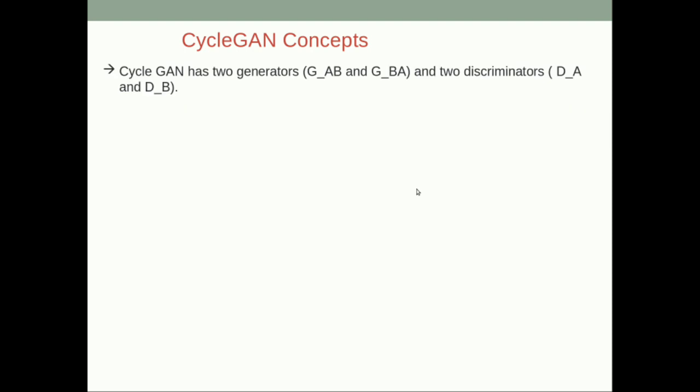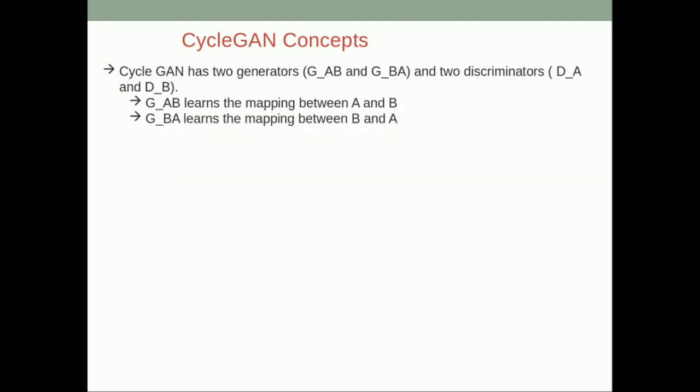In CycleGAN we have two different generators and two different discriminators, unlike a standard GAN which has only one of each. Generator G_AB learns the mapping from A to B — selfie to anime. Generator G_BA learns the mapping from B to A — anime to selfie. Discriminator A tries to classify between actual selfies and fake selfies produced by G_BA, and Discriminator B tries to distinguish between actual anime and fake anime generated by G_AB.